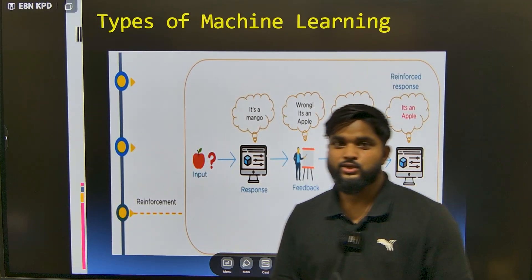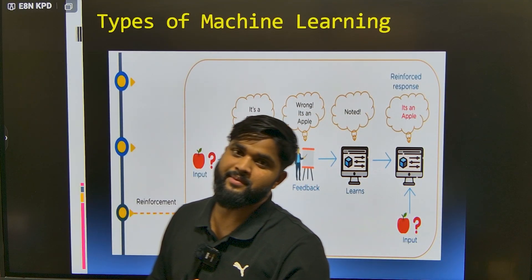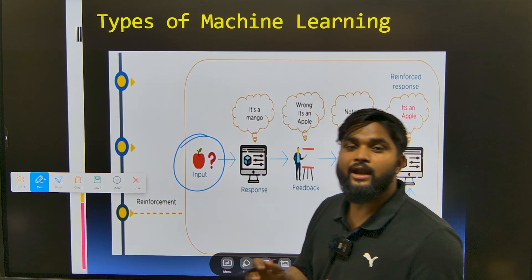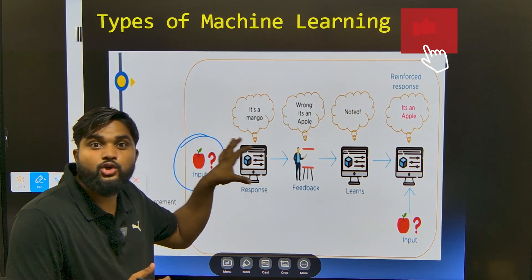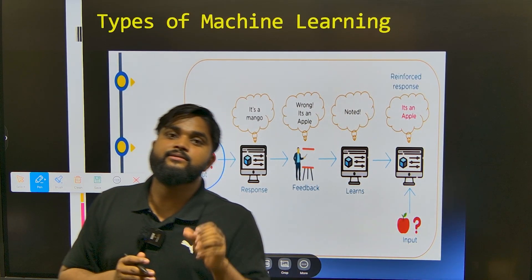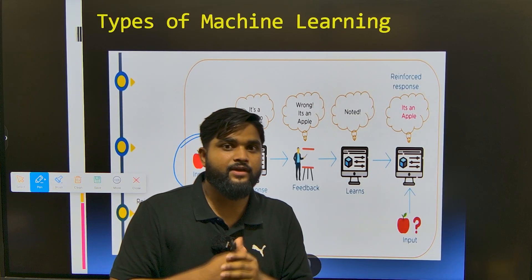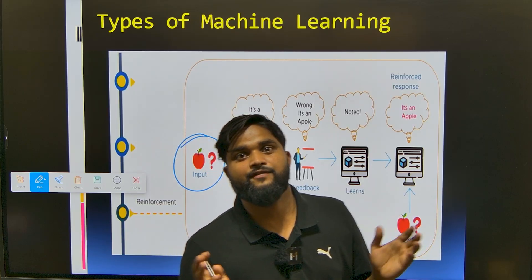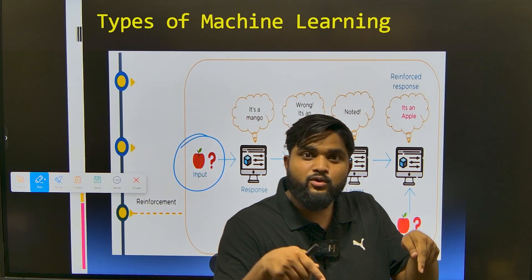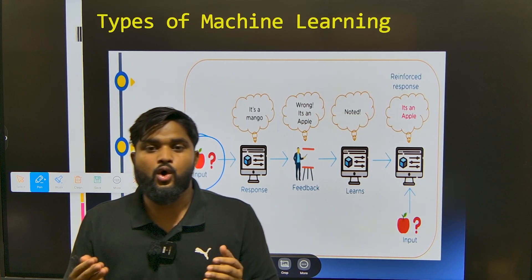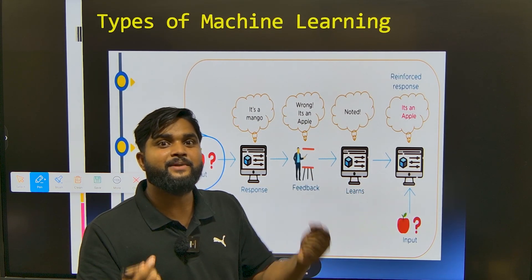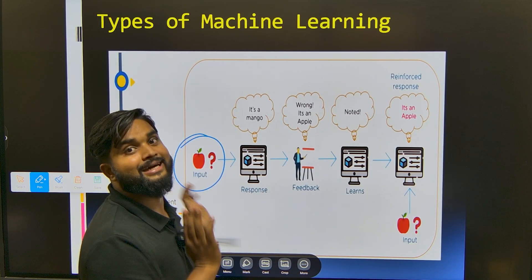Now let's see what is reinforcement learning. In reinforcement learning, we work with an agent and an environment. We pass raw data to a model, the model gives a response, and the agent provides feedback on whether the response is correct. A real-life example is ChatGPT — when you search for something, it sometimes gives you two options and asks which you prefer. If you select option one, ChatGPT understands that response one is better than response two. This is taking feedback, which is the same concept as reinforcement learning.